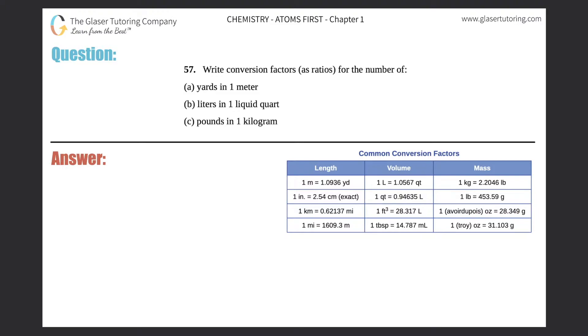Number 57: Write conversion factors as ratios for the number of (a) yards in one meter, and then we have (b) and (c). But let's do (a) first. I'm going to write out a, b, and then I'll put c down here.